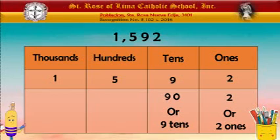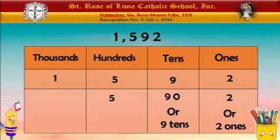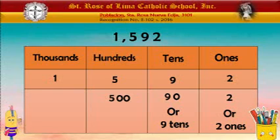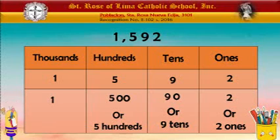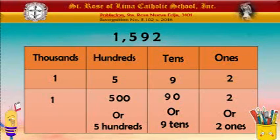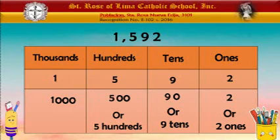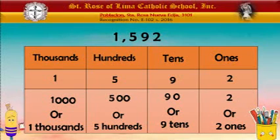Next is the value of 5. The 5 is in the hundreds, so we are going to add two zeros. The value of 5 in 1,592 is 500, or 5 hundreds. And last, in the thousands, we have the 1. Just like the hundreds and tens, we are not going to write it as just 1 — we add three zeros. So the value of 1 in 1,592 is 1,000, or we can write 1 and then the word 'thousand.' That is how we find the value of a number.